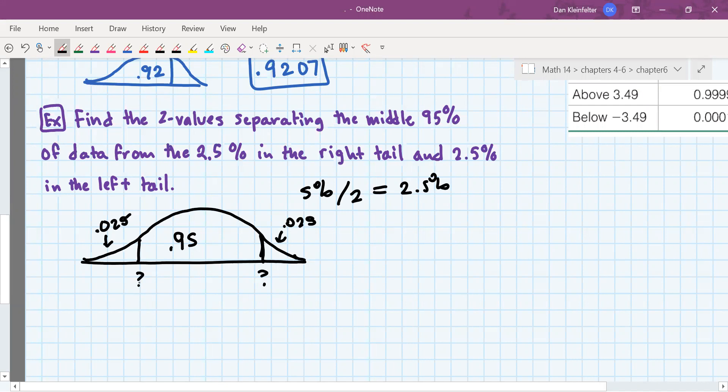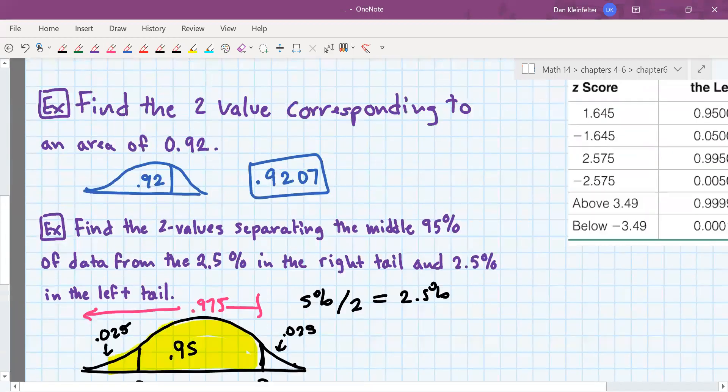We want to find the z values that correspond to those two cutoffs. Our table tells us z's or areas corresponding to z's starting at negative infinity. From the left end, all the way up, that is 97.5% of the data, the 95% that's in the middle and also the 2.5% that is in the left tail. So when we refer to the table, we're going to need the z that corresponds to 0.975.